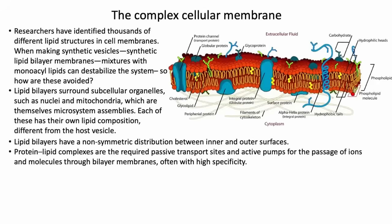Within each one of those, you have other organelles like nuclei and mitochondria that have their own bilayer assemblies with their own constitution — different than what's on the outside of the cell. Nobody knows how that was done. Plus, these have proteins. So there's this non-symmetric distribution.